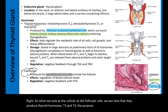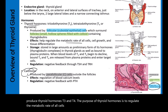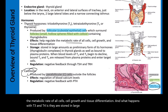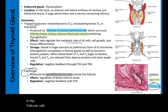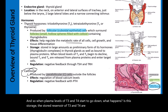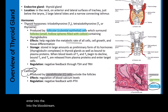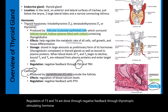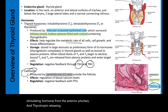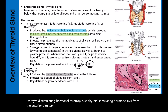When plasma levels of T3 and T4 start to go down, the stored reservoir is released from the follicular cells into the bloodstream. Regulation of T3 and T4 occurs through negative feedback via thyroid-stimulating hormone (TSH) from the anterior pituitary and thyrotropin-releasing hormone (TRH) from the hypothalamus. TRH travels through the hypophysial portal system to thyrotropes in the anterior pituitary, which release TSH into systemic circulation to act on the thyroid gland.